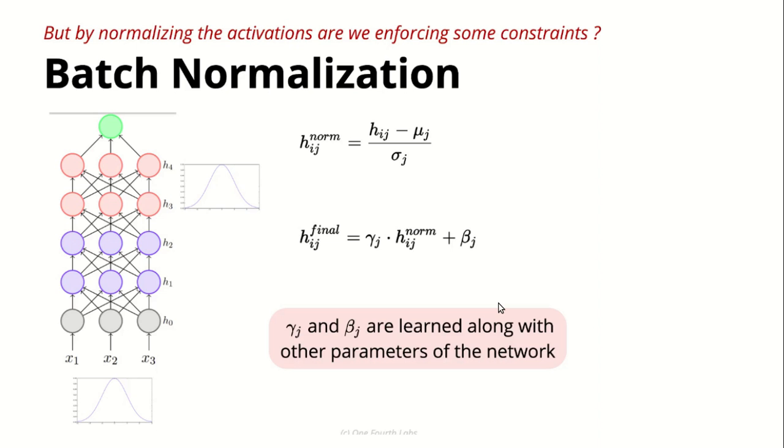Now the network decides what shape of data should enter. This problem is solved by introducing H_ij final equals gamma times H_ij norm plus beta_j. These are the trainable parameters we learn along with the network.